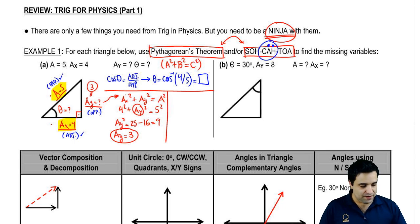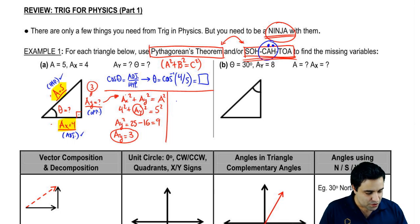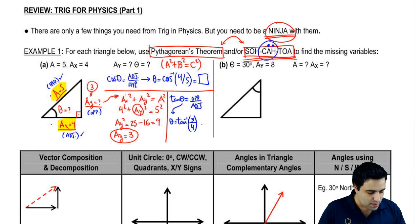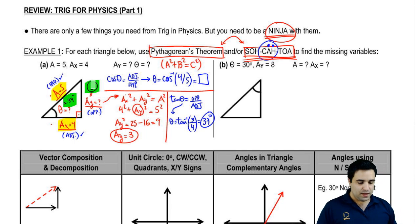Now I have all three sides so I can pick whichever of SOH, CAH, or TOA I want. I'll pick TOA since that's the one we usually use, so it's good practice. TOA says tangent of theta equals opposite over adjacent, but I want theta, so theta is the arc tangent of the opposite (3) over the adjacent (4). Plug that carefully into your calculator and you get 37 degrees. Highlighting the answers in green: AY equals 3 and theta equals 37 degrees.